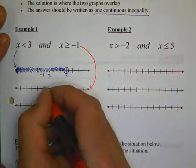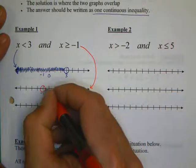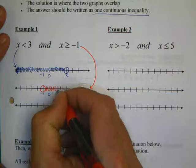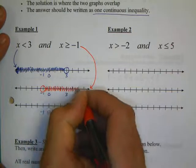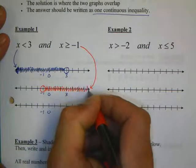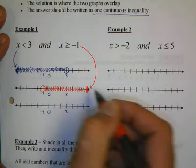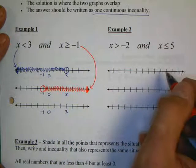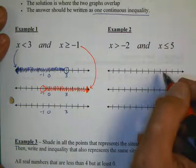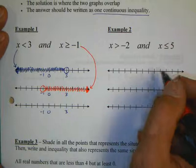Our second equation is x is greater than or equal to negative one. I'm going to graph this red one on the second number line. So, I'm going to put a circle at negative one. I'm going to shade to the right.